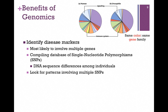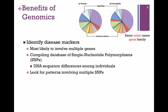We can also, by this method, identify disease markers. Many times, diseases involve mutations in multiple genes, and so we can compile a database of what are referred to as single nucleotide polymorphisms, or SNPs. These are differences in DNA sequences among individuals, especially individuals who have that disease, and we can look for patterns and perhaps identify marker genes that will help us to identify and treat those diseases.